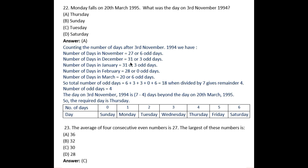For December, there are 31 days. Since 7×4=28, there are 3 odd days. Continue calculating odd days up to 20th March 1995. The total odd days come to 18. Dividing 18 by 7: 7×2=14, remainder is 4. So there are 4 odd days in total.